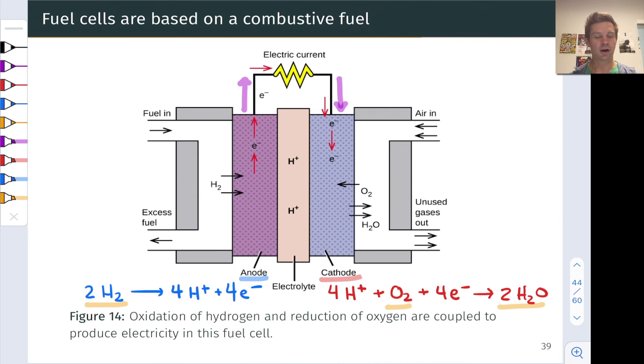So fuel cells are fantastic for supplying electrical current and voltage from very simple ingredients, although hydrogen presents some practical difficulties as a fuel because it's a gas, very hard to store, very hard to transport. And so it's got some fundamental limitations in that respect.